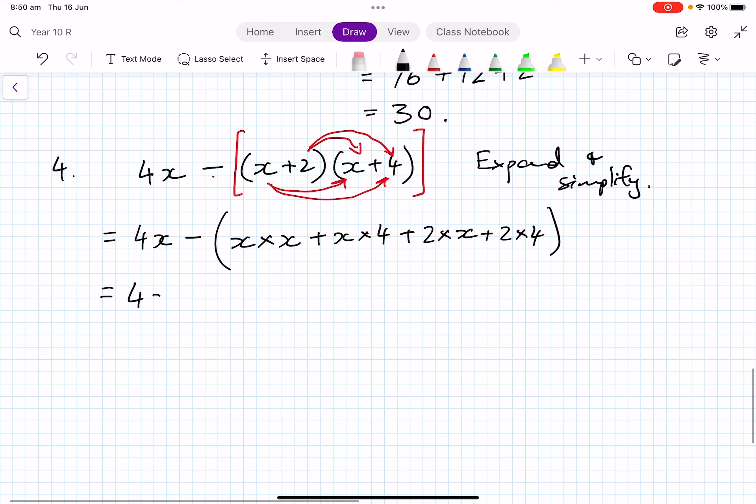So the 4x minus all this stuff, I'm going to leave it in brackets. x squared plus 4x, x times 4 is 4x. 2 times x is 2x, plus 8. Now, you can do this quicker once you get used to it, but for the moment, 4x plus 2x is 6x, plus 8.